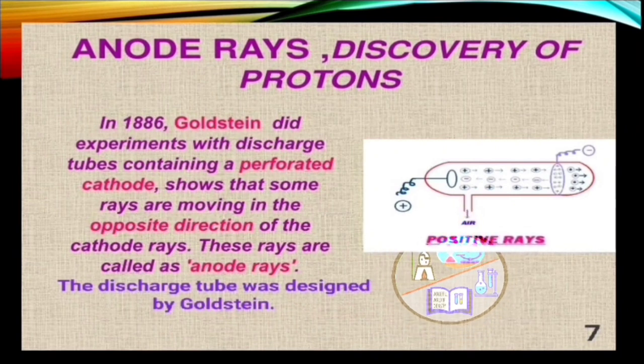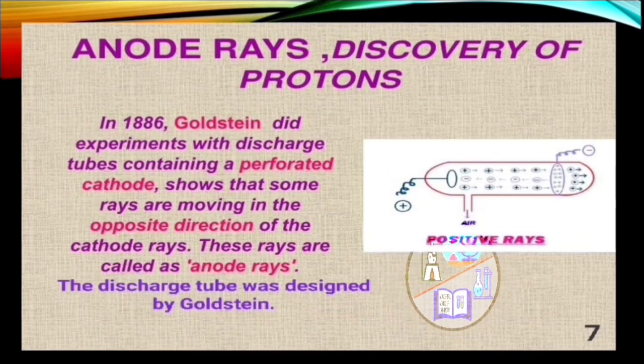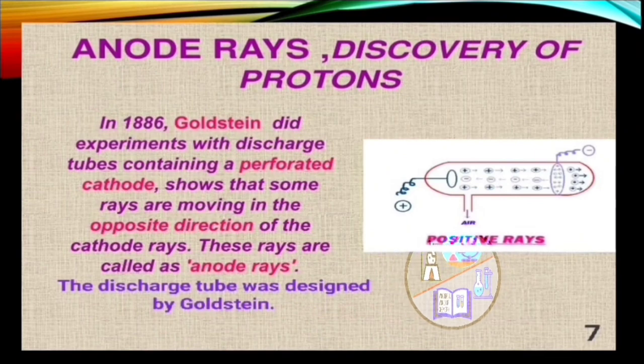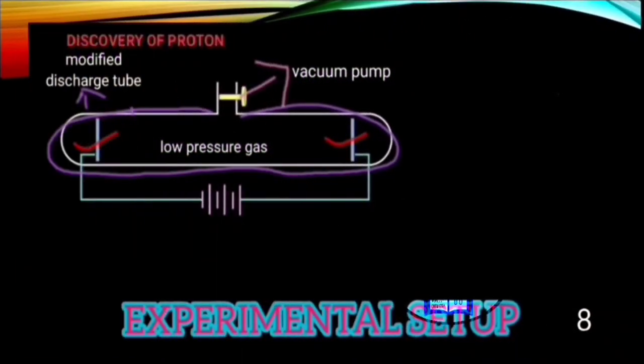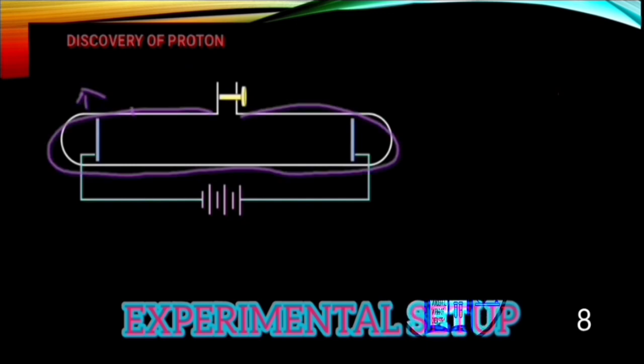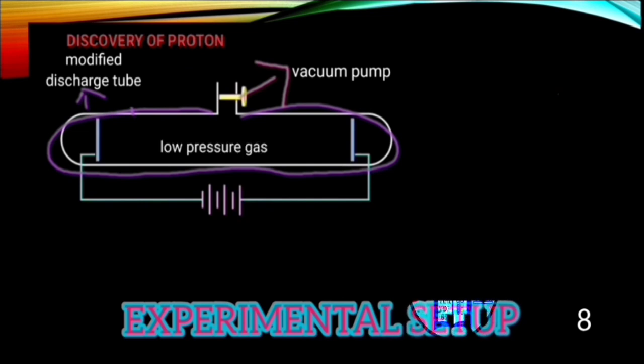So now let's see the experimental setup that he used for his experiment. The setup was exactly same as cathode ray tube experiment done by JJ Thompson, leaving few exceptionals. This is the modified discharge tube connected with a vacuum pump. The vacuum pump helps to maintain a low pressure of gas.